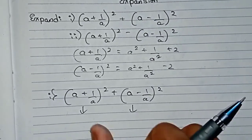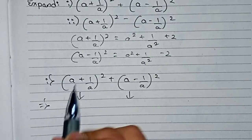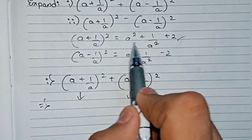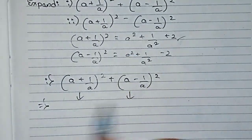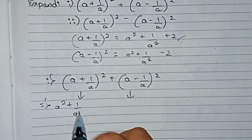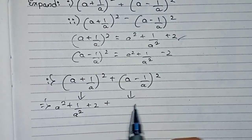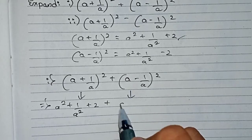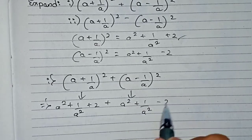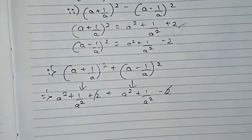For these two we will use the identities to find both sides. First, (a + 1/a)² gives a² + 1/a² + 2, and (a - 1/a)² gives a² + 1/a² - 2.